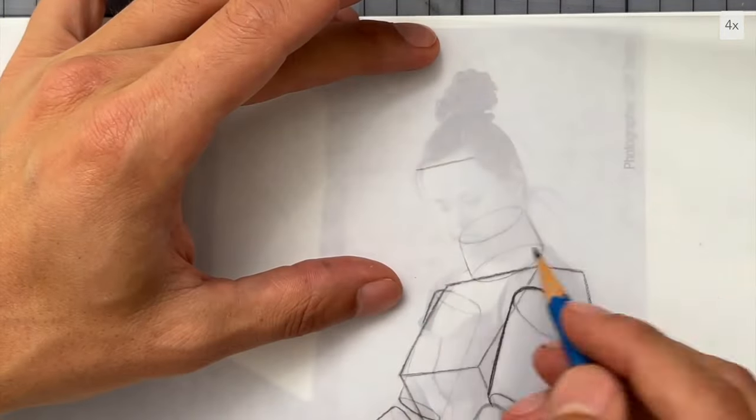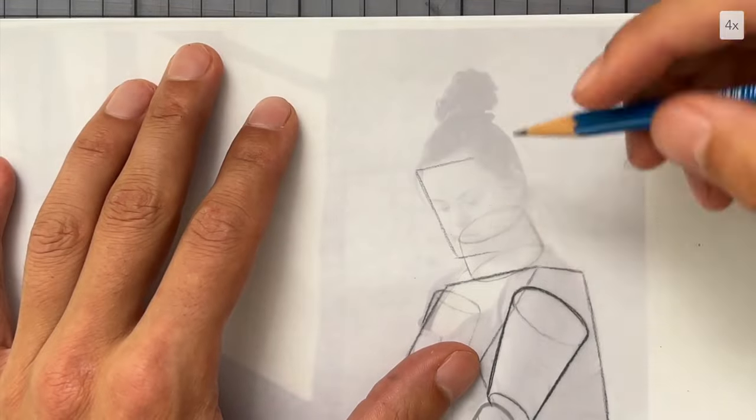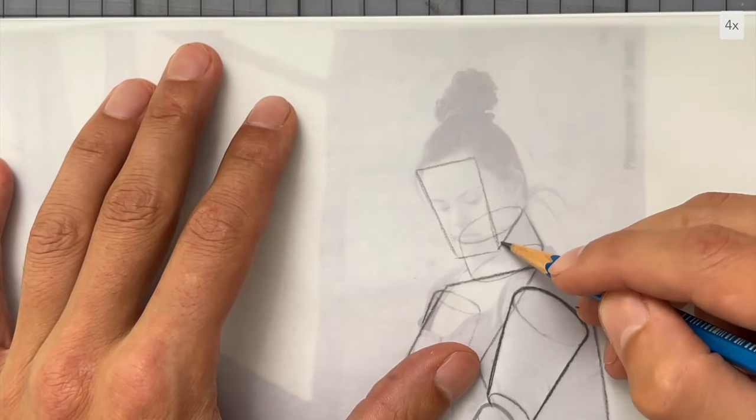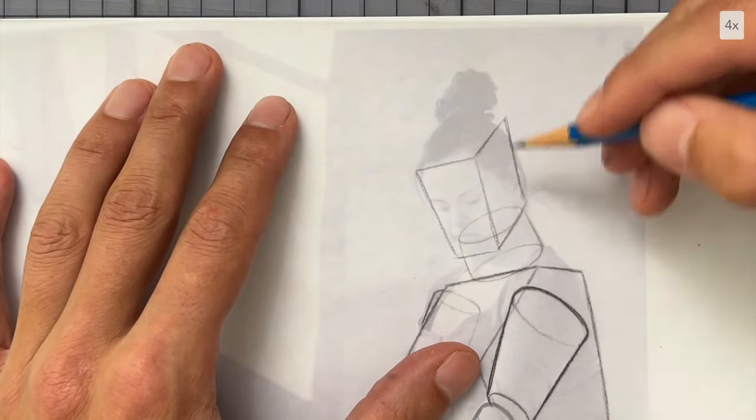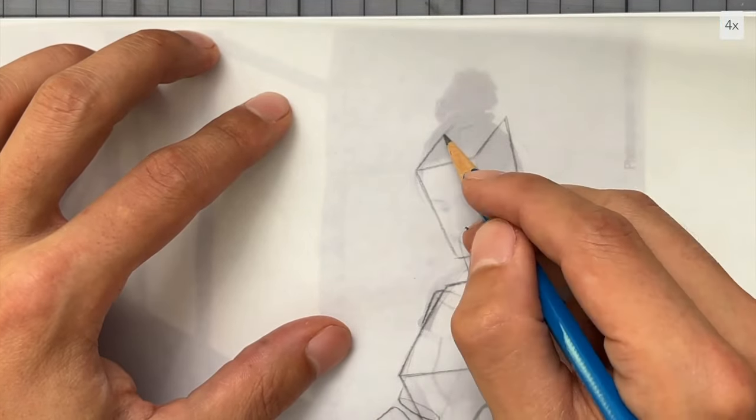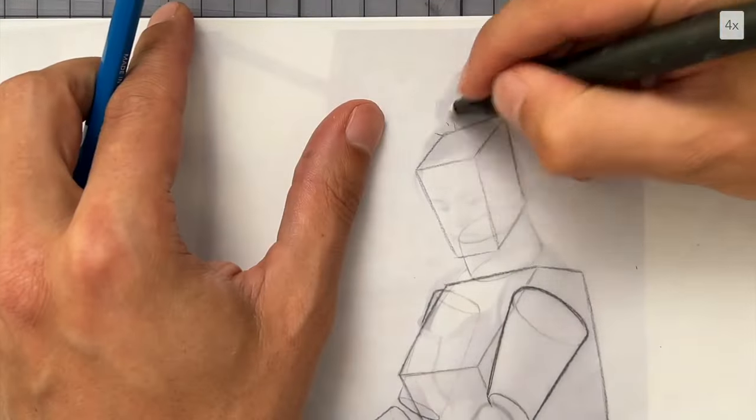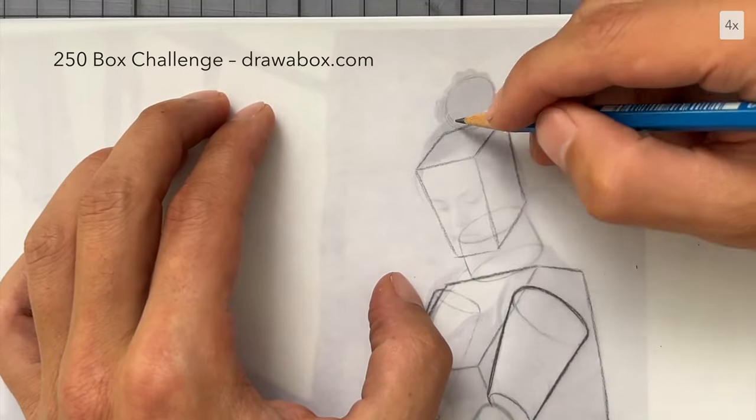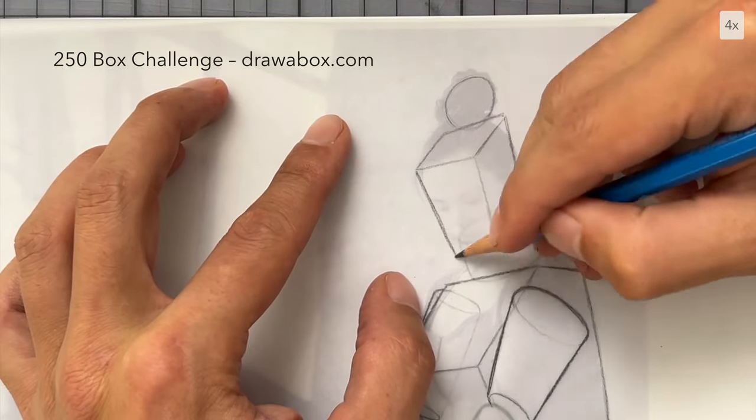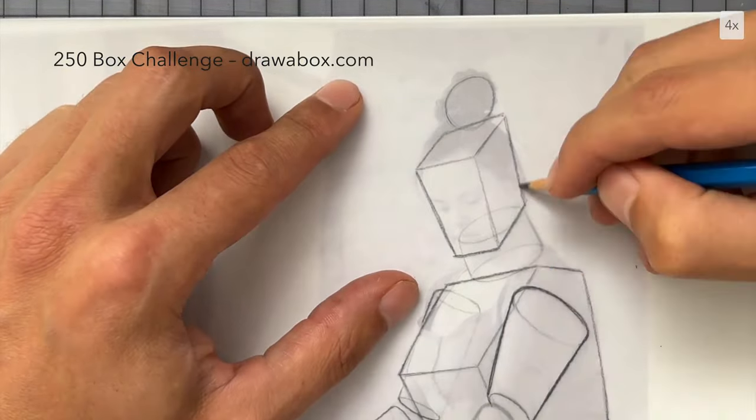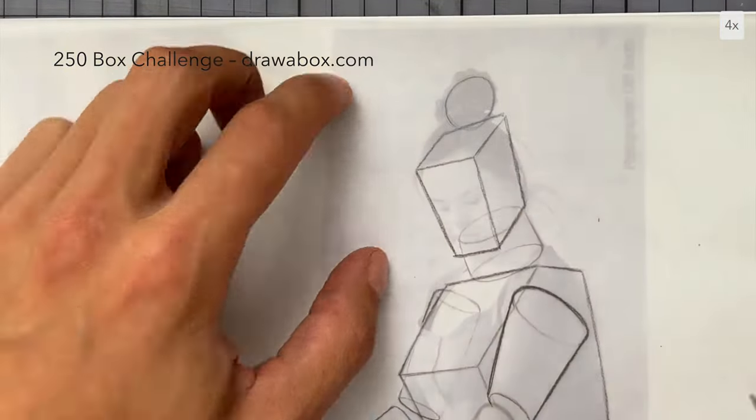I start with the forehead and the chin, then establish the sides of the head and the top plane. As I draw all these perspective lines, I can really feel how useful the 250 box challenge at drawabox.com has been for me. If you haven't done it, I highly recommend it.